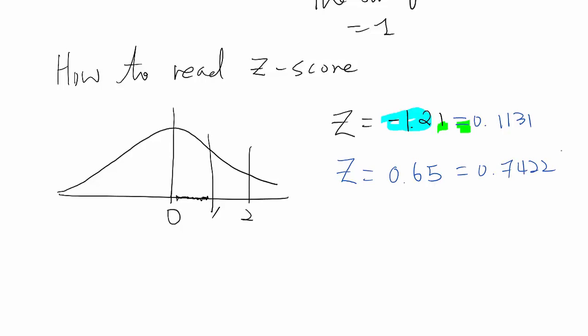Now we need to know what those values indicate. We found 0.1131 and 0.7422, but we need to know what their meaning is. The meaning is cumulative area from the left side until that z-score.